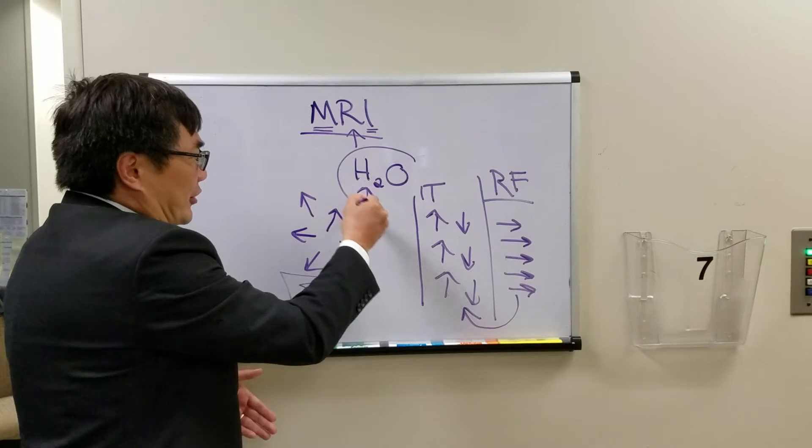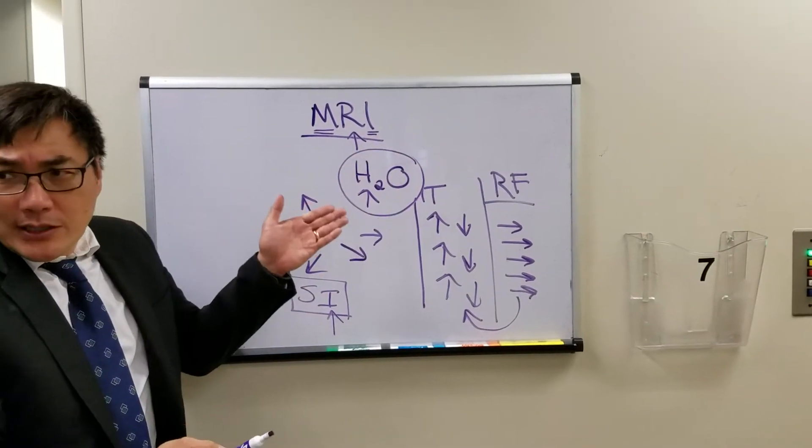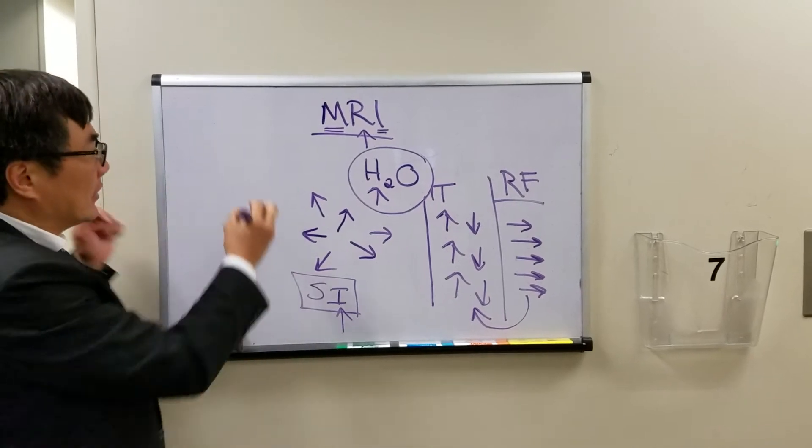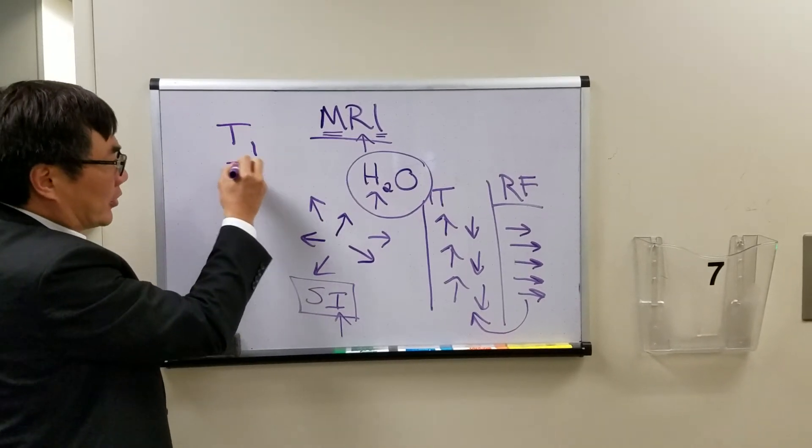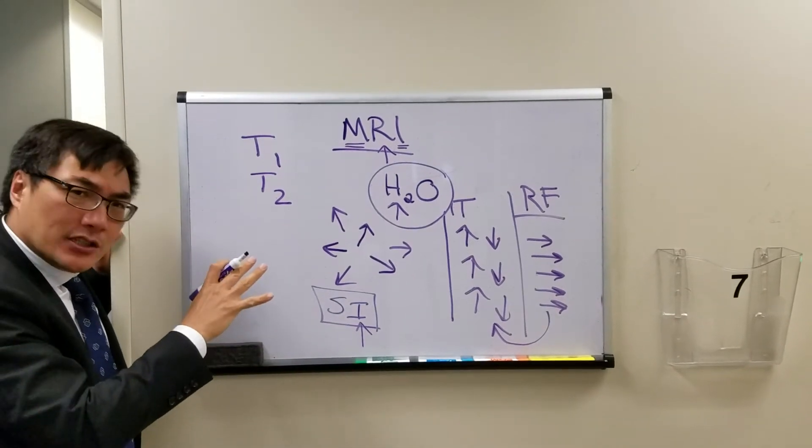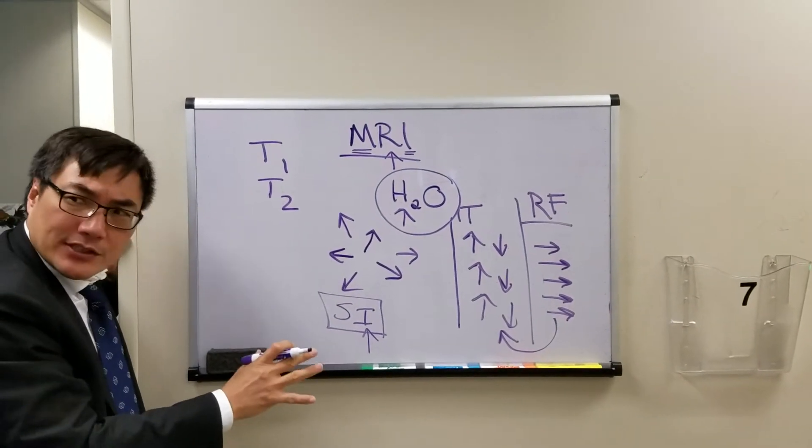So, knowing that hydrogen and water is the anatomic substrate of MRI, you can then weight the study towards time constant 1 or time constant 2. And by weighting the study, all we're doing is changing the parameters of the acquisition of the signal.